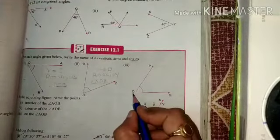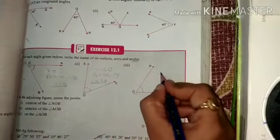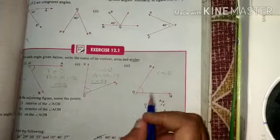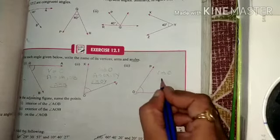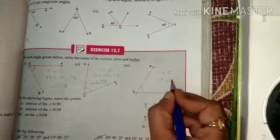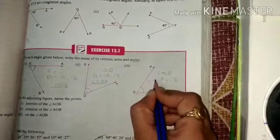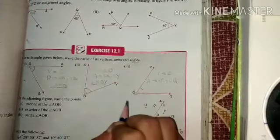Third case is same. Vertex is at point O and arms are OP and OQ. These are the arms. And one thing is remaining.